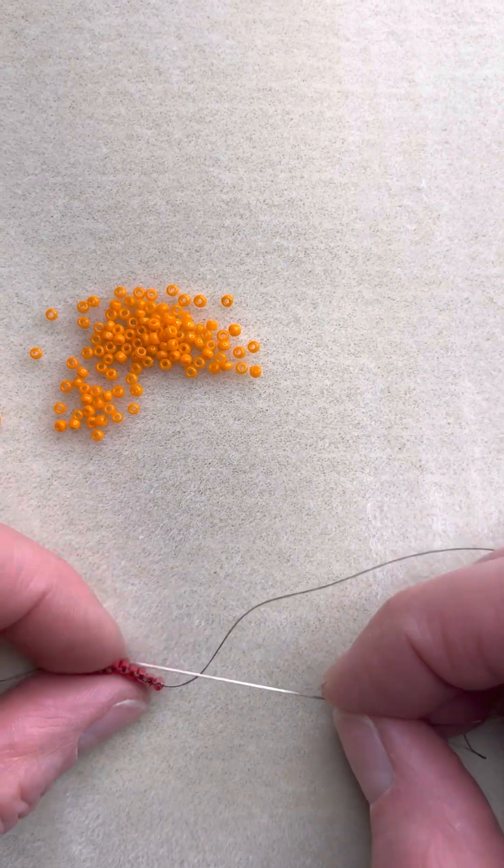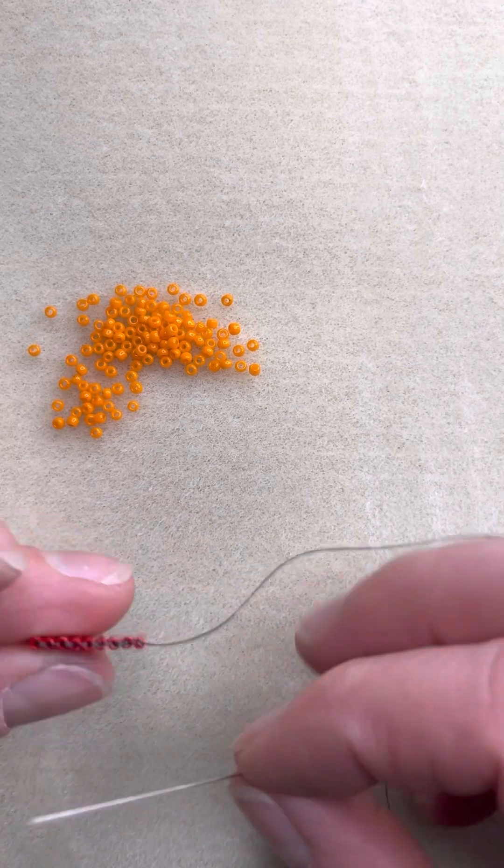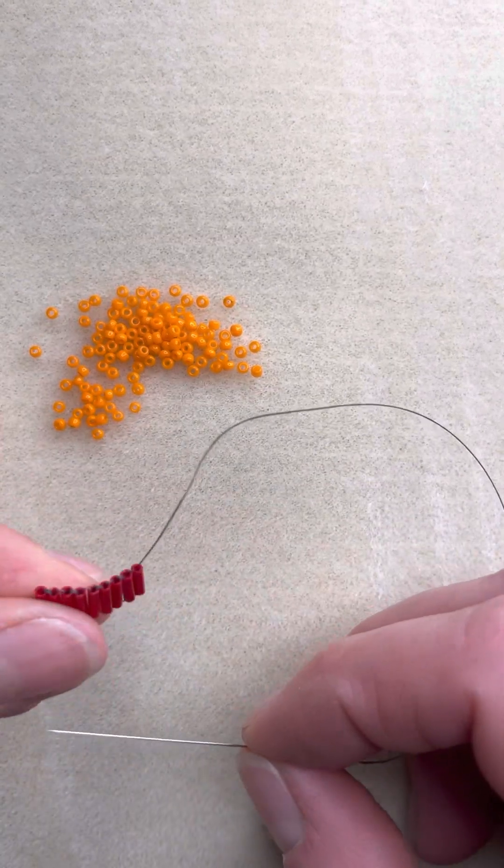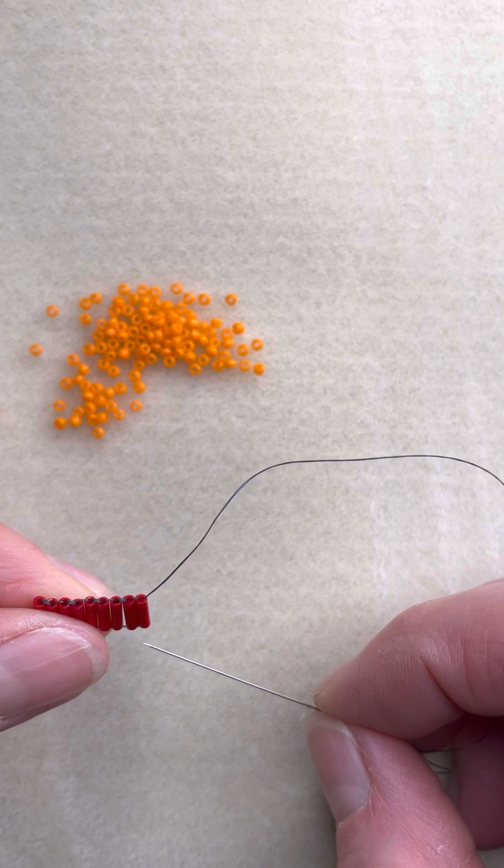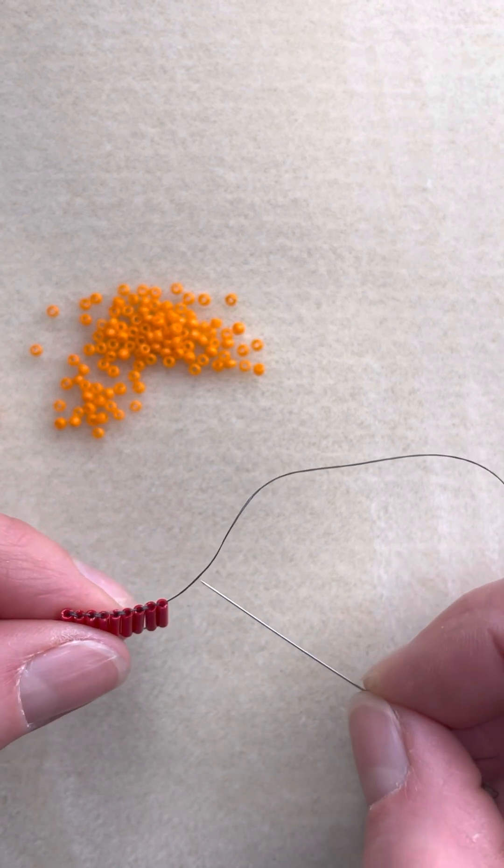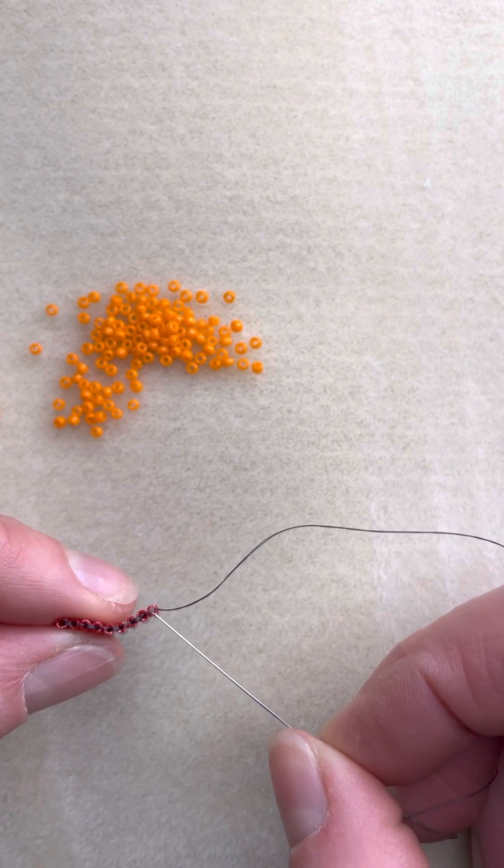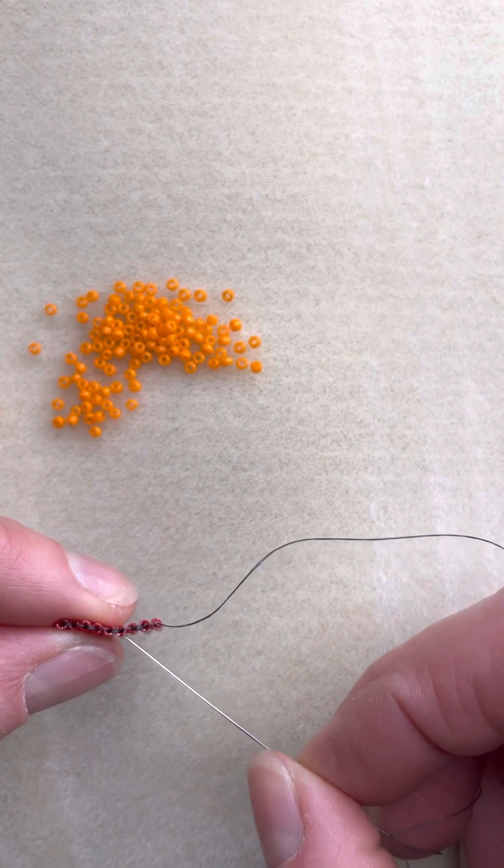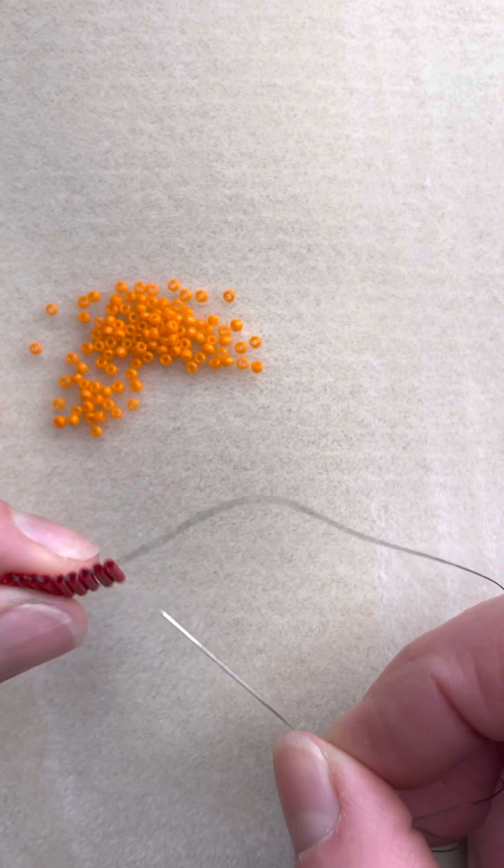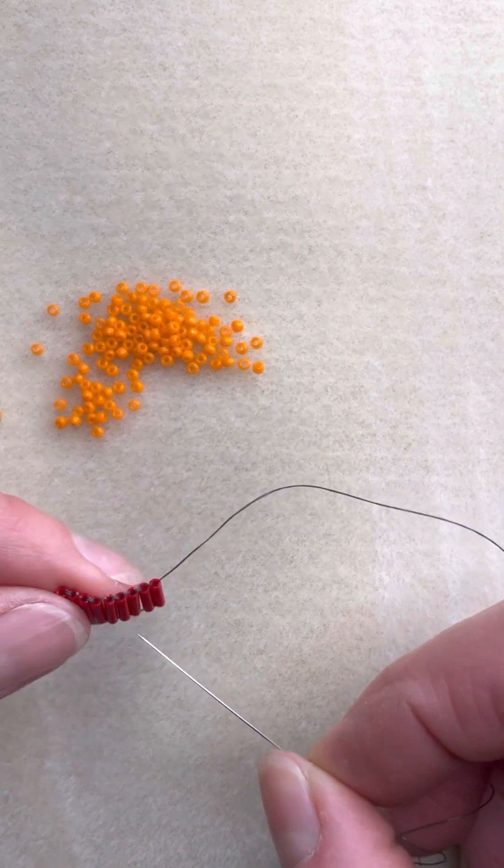So I want to start by pointing out something before I even get into the beads. This is a little tricky to see. I'm very intentionally trying to use some contrasting colors here, still may be hard to see. When we've done this ladder stitch we've created these stitches going in and out of the bugle beads.